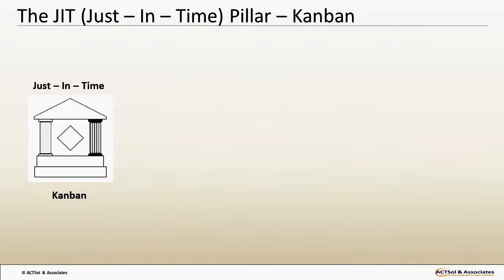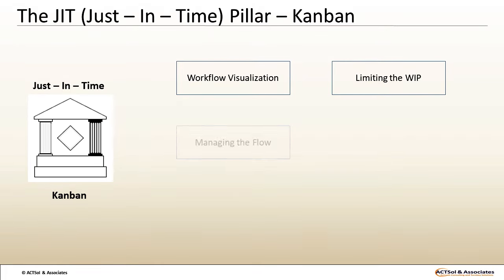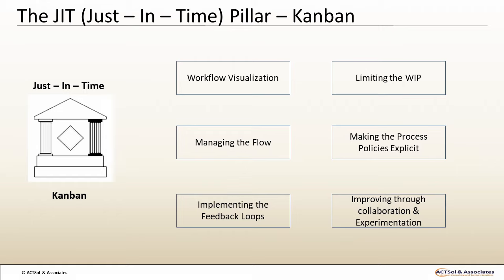Core Practices of the Kanban Method. There are six excellent practices used in Kanban workflow: Visualize the workflow, Limit the Work in Progress (WIP), Manage the flow, Make the process policies explicit, Implement feedback loops, and Improve collaboratively and evolve experimentally using the scientific method.